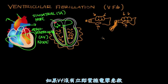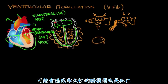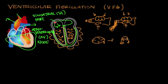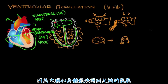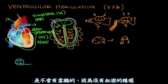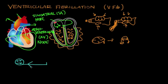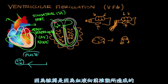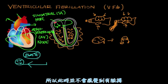If V-fib isn't reversed immediately through electric shock, you're going to have permanent brain damage and death, because the brain and the body aren't getting enough oxygen. A person whose heart is in V-fib will not be conscious, since they have no blood circulating, and you won't be able to feel a pulse. Pulses are made by forward movement of blood through the vessels, so with no forward movement, there's no pulse.